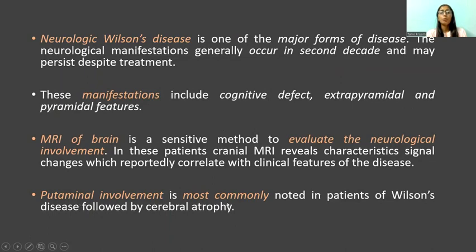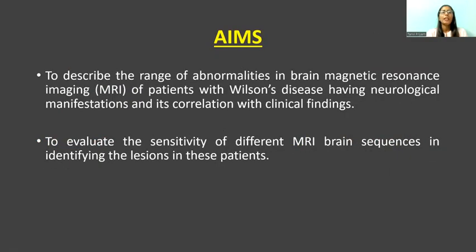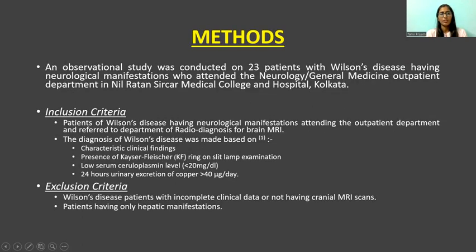Putaminal involvement is most commonly noted in patients of Wilson's disease followed by cerebral atrophy. The aims of the study were to describe the range of abnormalities in brain MRI of patients with Wilson's disease having neurological manifestations, its correlation with clinical findings, and to evaluate the sensitivity of different MRI brain sequences in identifying the lesions in these patients.